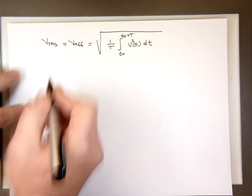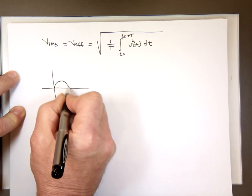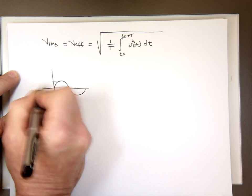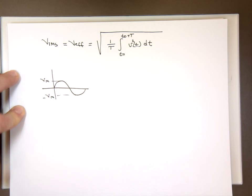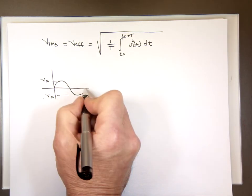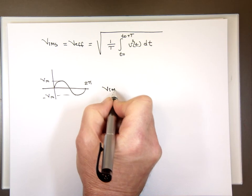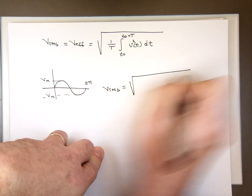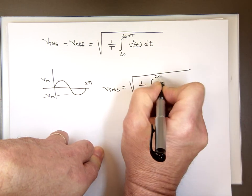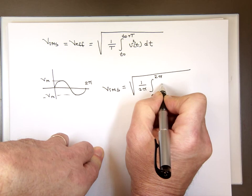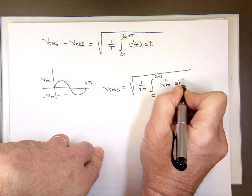So let's calculate the RMS value for a sine wave. There's my sine wave. It has a peak value called Vmax, or peak, whatever you want to call it. So the period for that is 2 pi. So VrMS will be 1 over 2 pi, the integral from 0 to 2 pi, of Vmax squared, sine squared t dt.